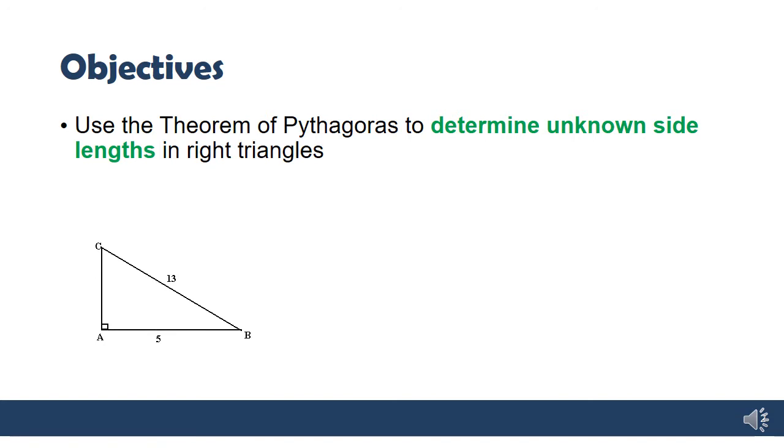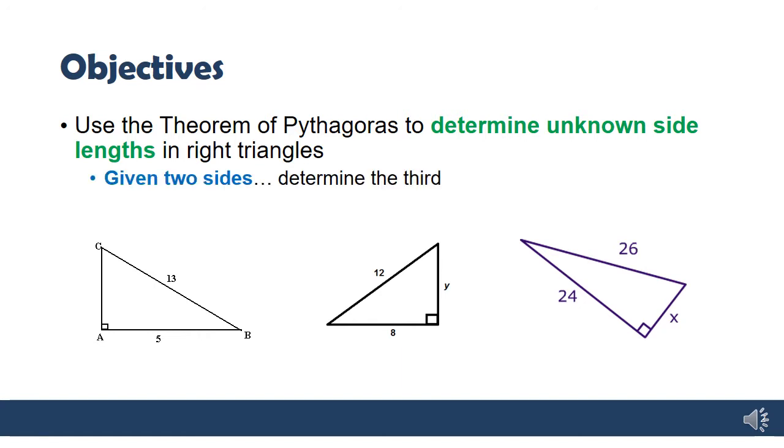So you might get a picture that looks like this, where you're given two of the sides but we don't know the third one. And there are lots of different ways that we could ask you this question. But basically what I want you to get out of this diagram is that you use Pythagoras when you know two lengths and you need to determine the third one.